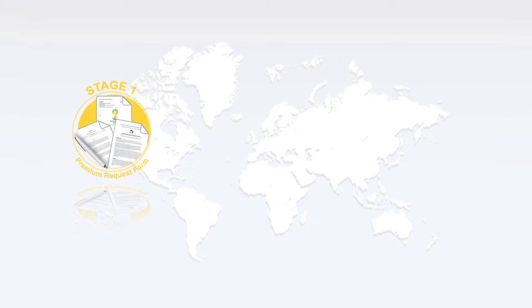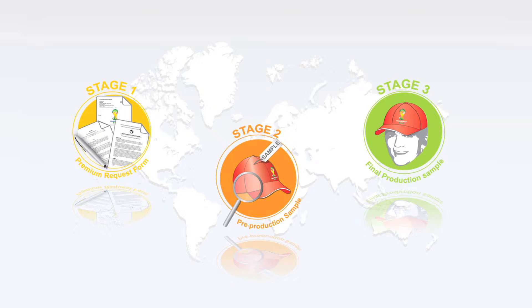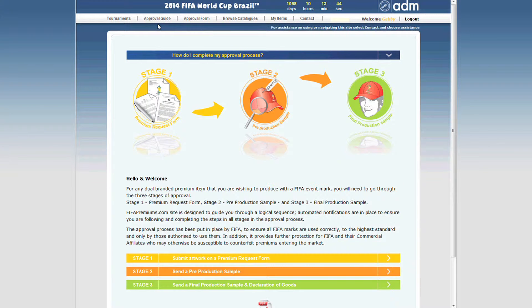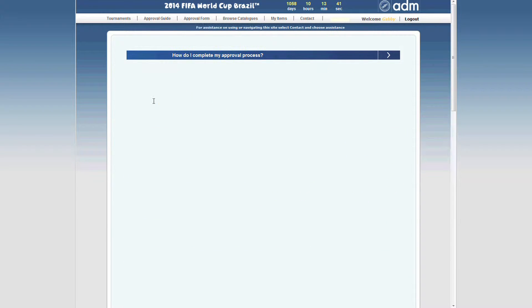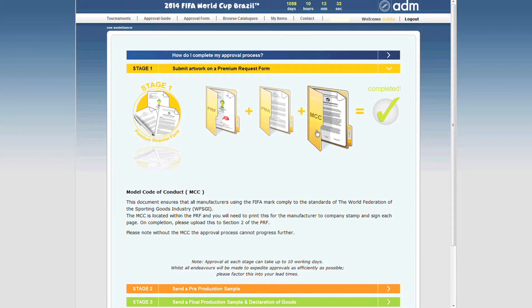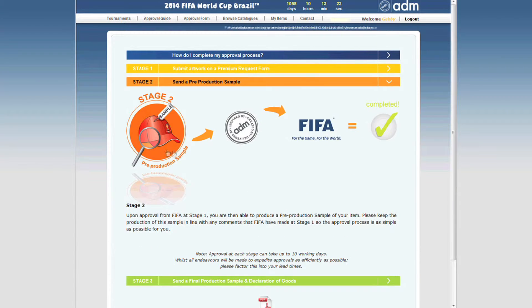The Licensing Management Tool built specifically for FIFA incorporates a controlled three-stage approval process, from initial artwork through to pre-production samples and finally production samples. First-time users are automatically directed to an interactive help guide that takes them through the tool and how approval is gained from the licensor.